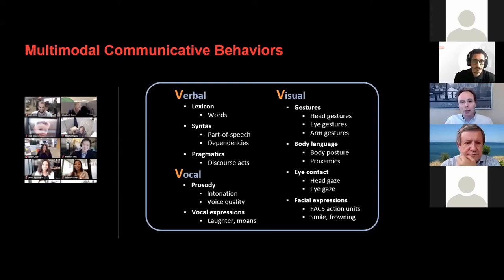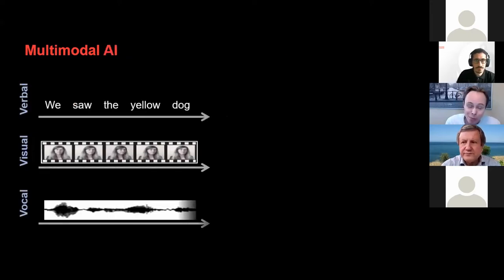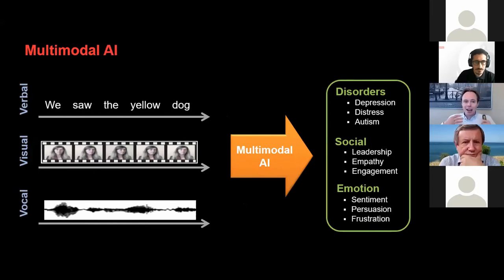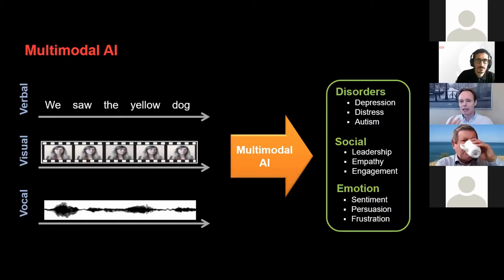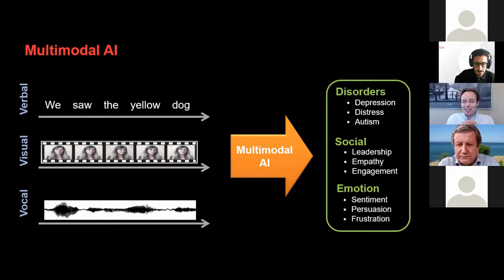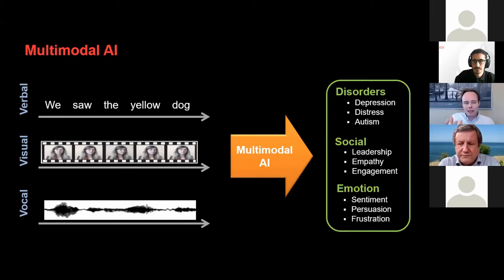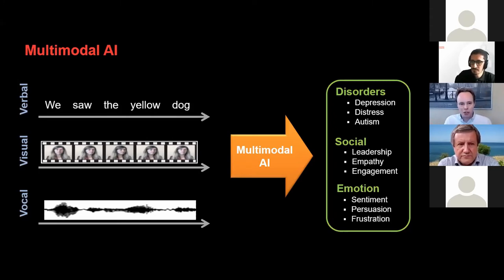When I use the term multimodal AI, I mean studying multiple heterogeneous modalities with the goal of inferring something — maybe on the medical side, looking at disorders, or looking at social signals or emotions. If you ask me for the most generic definition of multimodal at its core, it's the science of heterogeneous data. Today I will talk about a subset: multimodal AI, which brings the human-centric aspects where the modalities and skills like perception, generation, and inference are human-inspired. That's where the AI comes in.